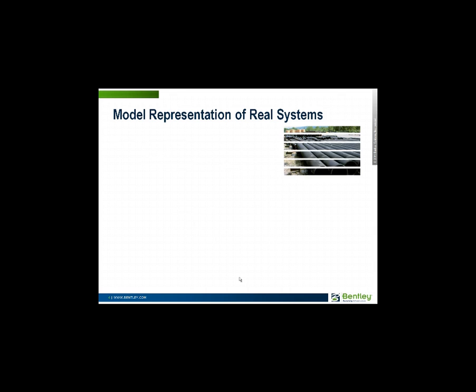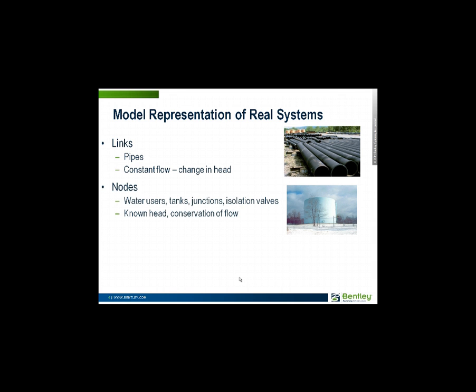How does a model represent a water distribution system? The first type of components we'll call links. These are essentially the pipes in your system. Along any pipe, the equations are solved based on a constant flow from one end to the other, and what is calculated is the change in head, the change in hydraulic grade line along the pipe.